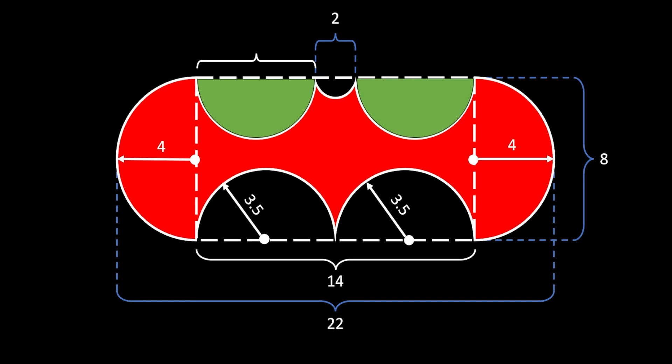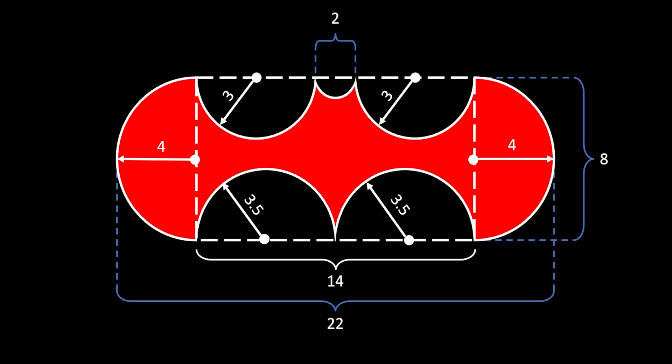Now let's turn our attention to the two green semicircles on the top and find their diameter. Since the length of our rectangle is 14 and the distance between the Batman horns is 2, to find this diameter we subtract 14 minus 2 and divide by 2, since there are two of these semicircles. That gives us 6, so the radius of each green semicircle is equal to 3. The same applies for the semicircle on the right.